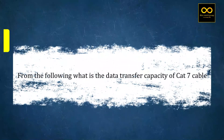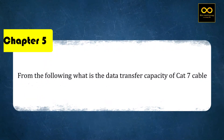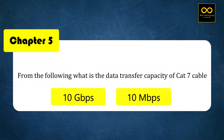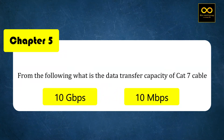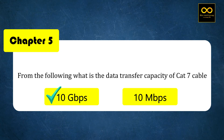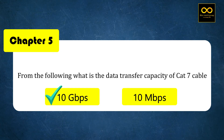From the following, what is the data transfer capacity of a CAT7 cable? Option A: 10 Gbps. Option B: 10 Mbps. The right answer is option A — 10 Gbps. CAT7 cable.